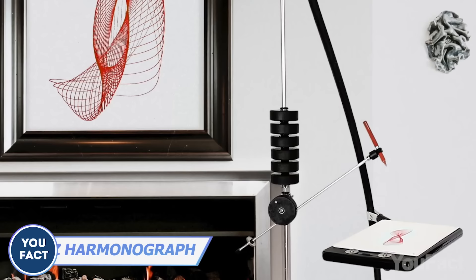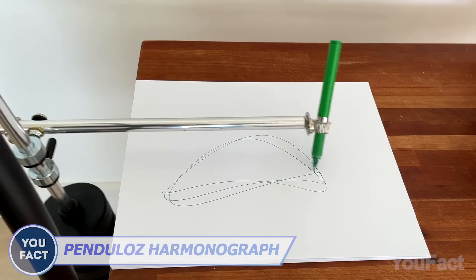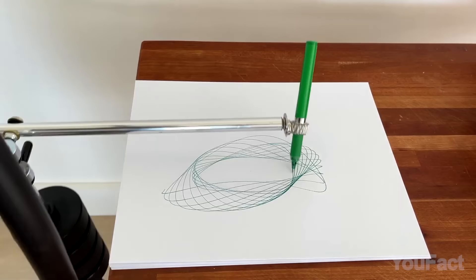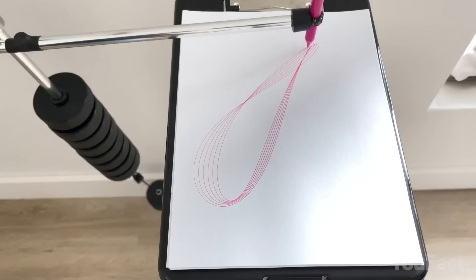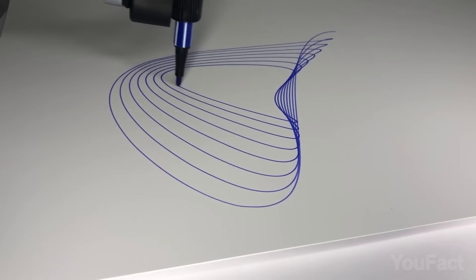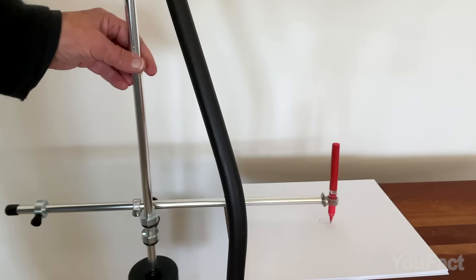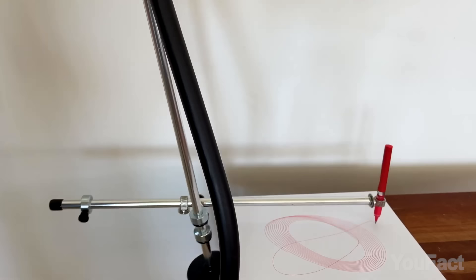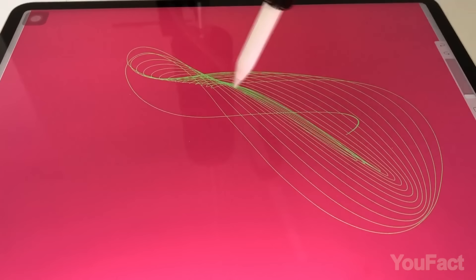Ever wondered why some famous artist chaotic squiggles sell for a fortune? Let's exploit this phenomenon and make some extra cash with the Pendulum Harmonograph, the ultimate drawing machine. Equipped with a precision weighted arm and a swinging motion, this thing offers unrivaled accuracy and user-friendliness. Simply attach it, give it a gentle push, and let gravity do its thing. You'll have to invest some time in assembling the contraption and practicing with a few starter papers, but trust me, the end result is worth it.